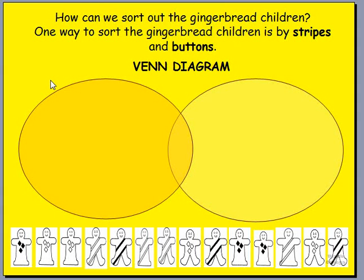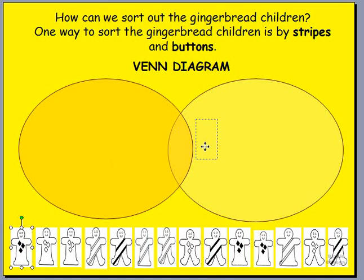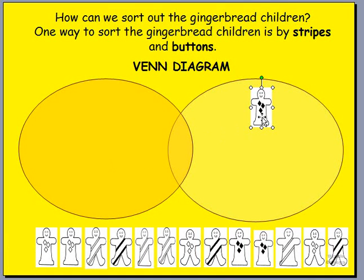Have a close look at the bottom of the screen. Now the two circles in the middle of the page — on the left side — we're going to sort them all out. We're going to put all the ones that have stripes on the left, and we're going to put all the ones that have buttons on the right. We're going to give them groups of their own circles because they share the same attribute. The first one we look at has buttons, so we're going to put the one with buttons right over here. That gingerbread child has buttons.